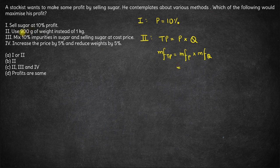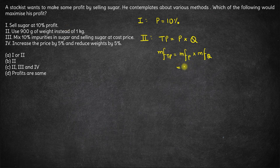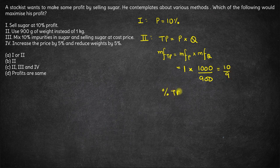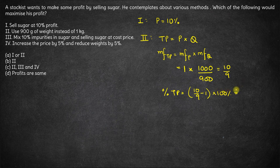He uses a 900 gram weight instead of 1 kg. Since nothing is mentioned about price, we assume his cost price and selling price are the same, so multiplication factor for price is 1. For quantity, when a customer comes to buy 1000 grams, he gives only 900 grams — so 900 gram quantity is being sold as 1000 grams. Multiplication factor is 1000 upon 900, which is 10 by 9. Hence, percentage change in total price is 11.11%.